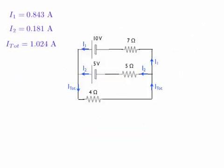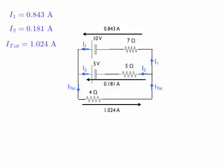Going back to our circuit, these are the directions I had guessed for each of the currents. In this case I1, I2, and I-total all came out to be positive numbers, so all of my guesses happen to be correct. In the top segment, I1 flows to the left at 0.843 amps. I2 is 0.181 amps to the left. And at the bottom, I-total is 1.024 amps to the right. Now I know the current everywhere in the circuit, and if I wanted to I could use Ohm's law to calculate any of the individual voltage drops or power — anything I might want to know, now that I know current and resistance for each part of the circuit.